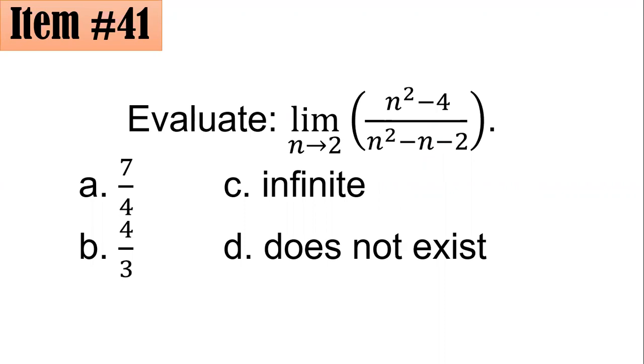If you substitute n by 2, it will become 0 over 0, which is an indeterminate form for this case. So we have an indeterminate form.